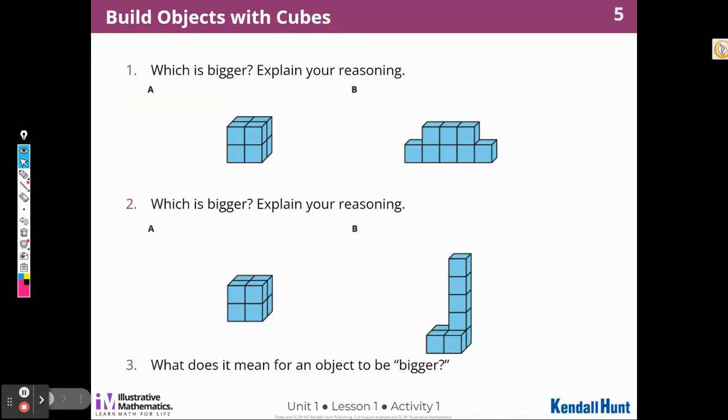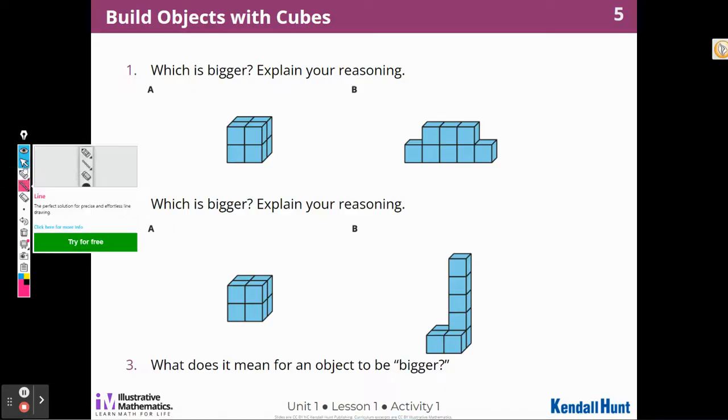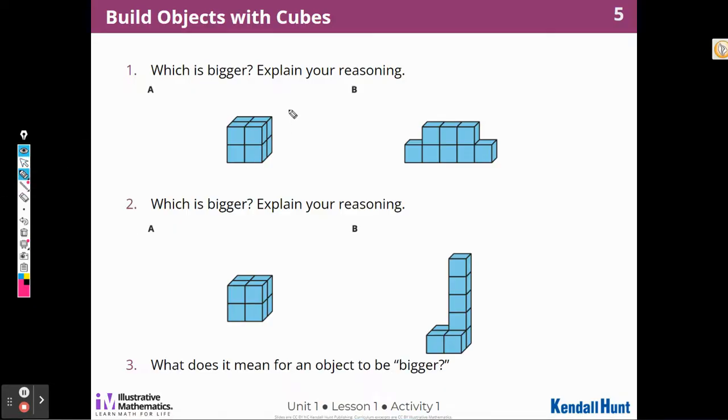Then we're going to move on to activity one, which one is bigger? So I'm going to compare all of these objects and ask myself, which one is bigger? How would I describe the amount of space each one takes up? Well, these objects look very familiar from the warm-up. Number one does for sure. So I know that this one has eight cubes. And this one has eight cubes. This one's longer. This one's a little shorter and wider.